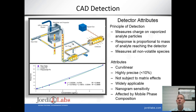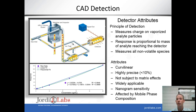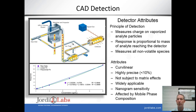The CAD detector measures species based on charge on vaporized analyte particles, so the response is proportional to the mass of analyte reaching the detector per unit time. It measures all non-volatile species — anything that will form a particle. This detector is curvilinear rather than strictly linear, so there will be some variation in response factor as a function of concentration. It is highly precise, typically less than 10%, and not subject to sample matrix effects. It is widely applicable to almost all non-volatile species, has nanogram sensitivity similar to UV, but is affected by mobile phase composition, since different mobile phases produce different particle types and thus different sensitivities.